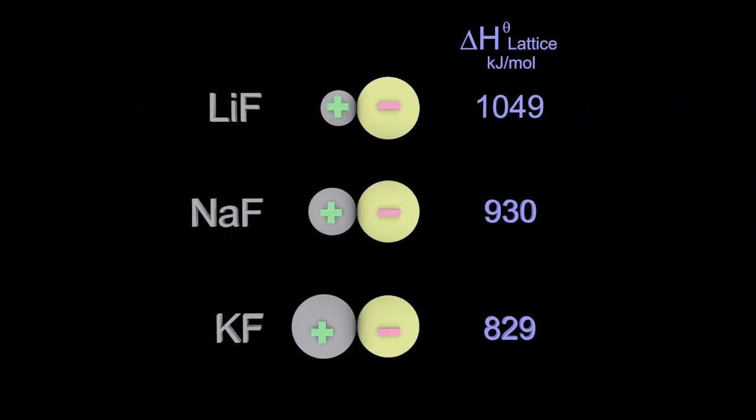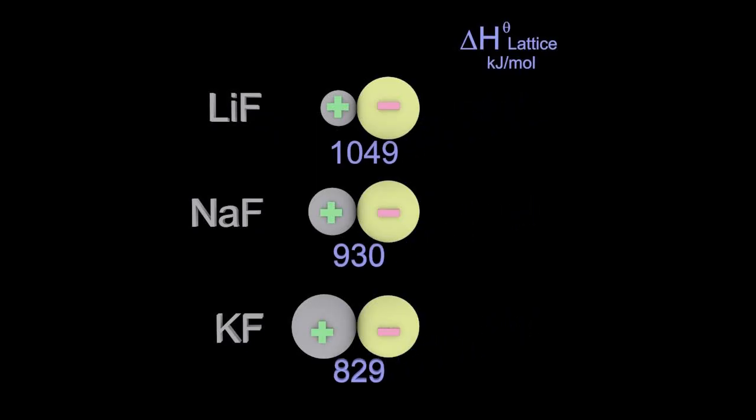Now why is that? Well, the potassium ion is the biggest of the group 1 ions there. So that positive charge is spread out over a greater surface area. So the potassium ion is less attractive.